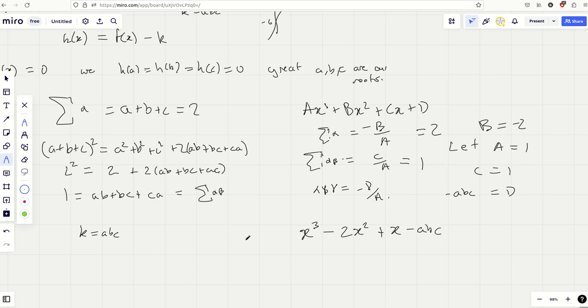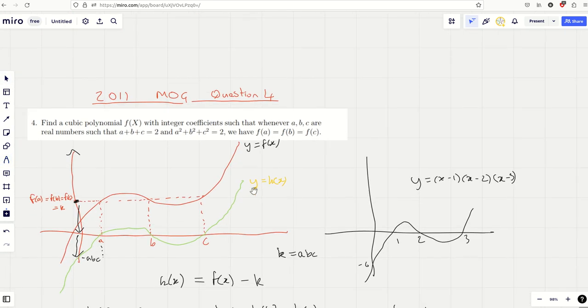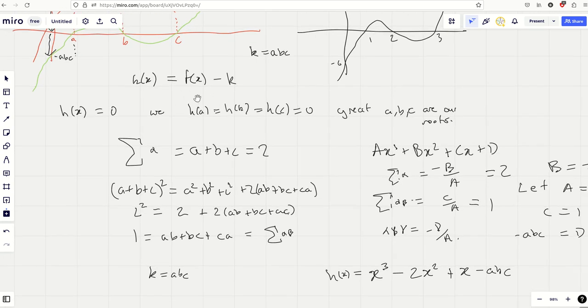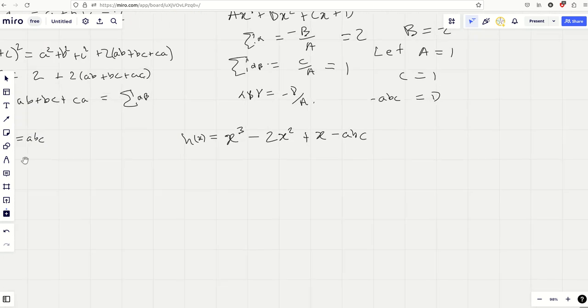Now that is our H(X) function. That is our cubic function here, y equals H(X) and one of the roots. All we've got to remember now is that H(X) equals F(X) minus K. And so we can see here, because K is ABC, we're just going to have the ABCs cancel. And you're going to have X cubed minus 2X squared plus X minus ABC equals F(X) minus ABC, because it's F(X) we're looking for.